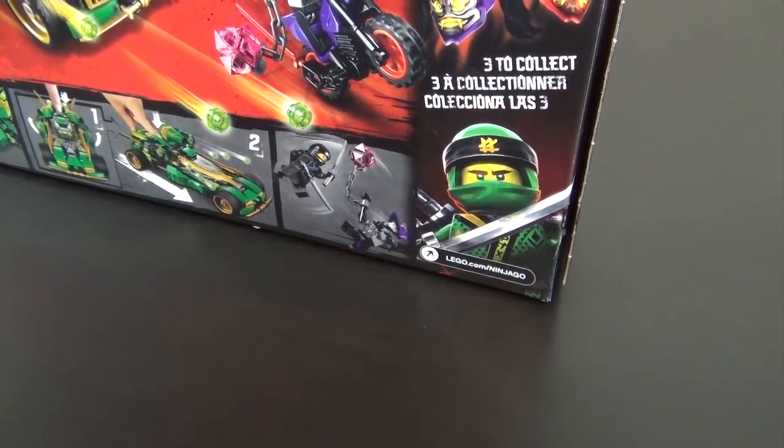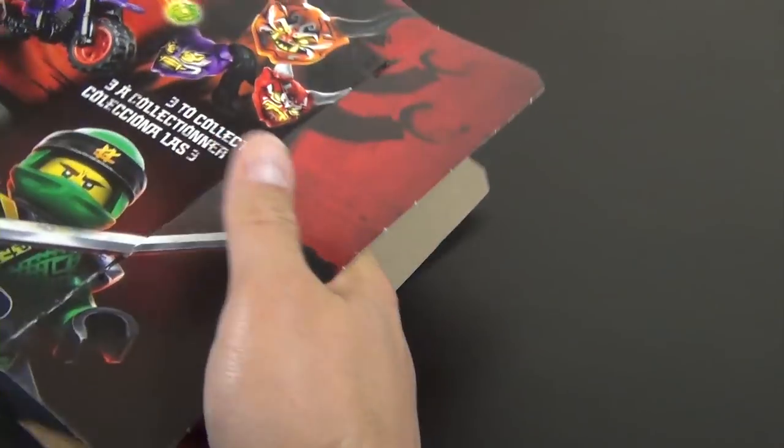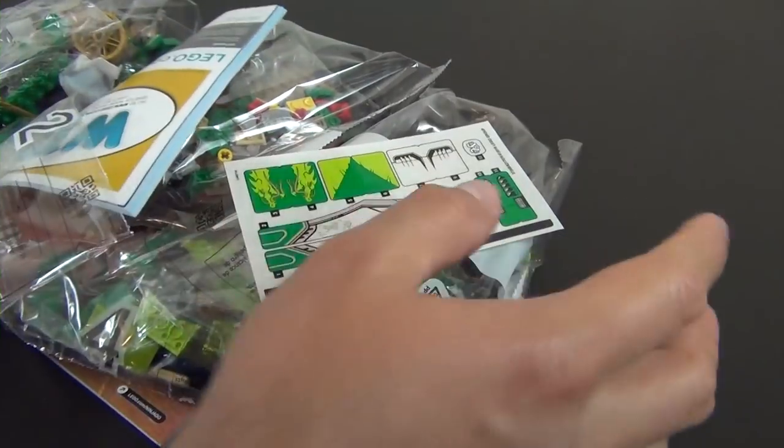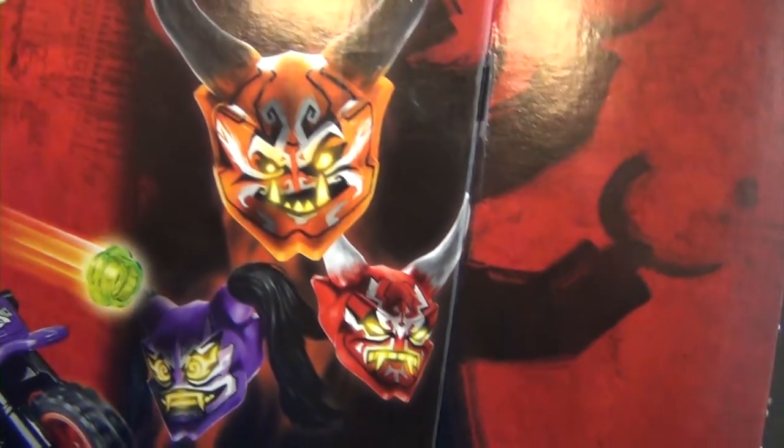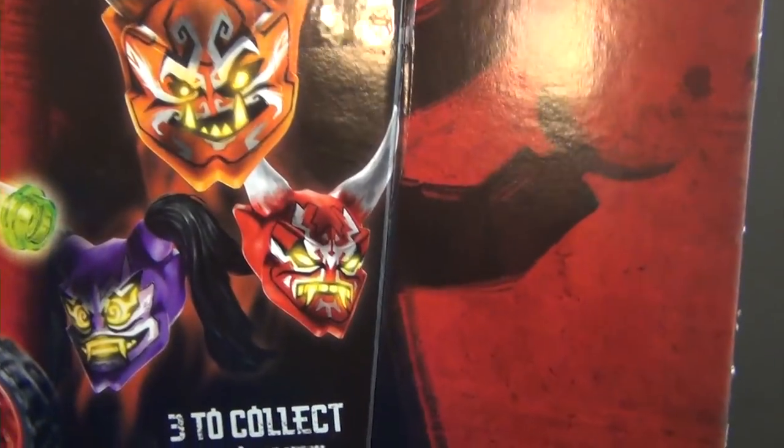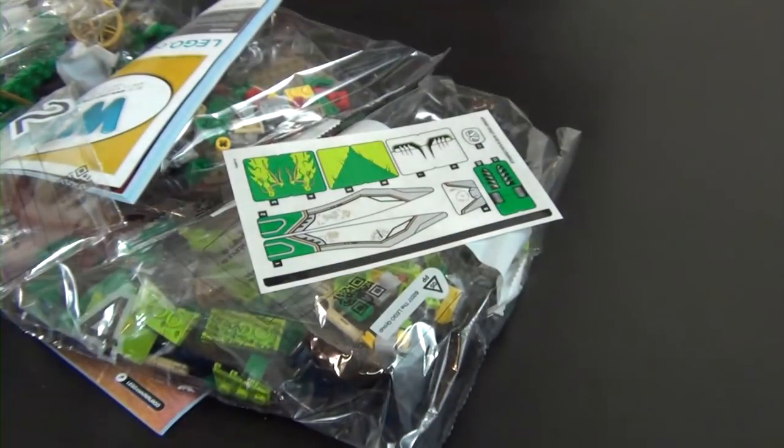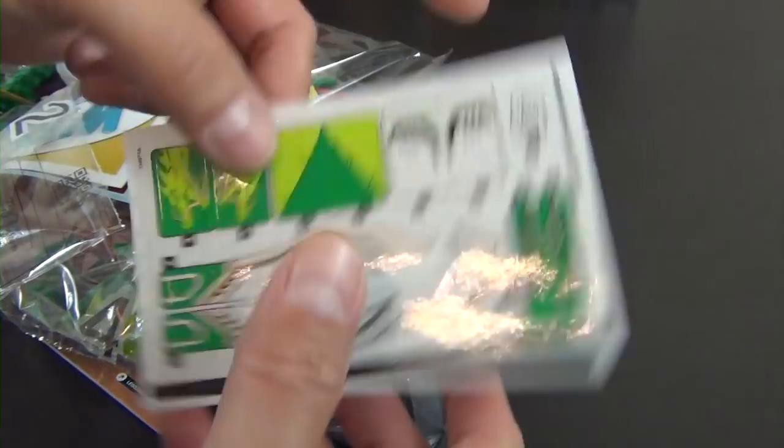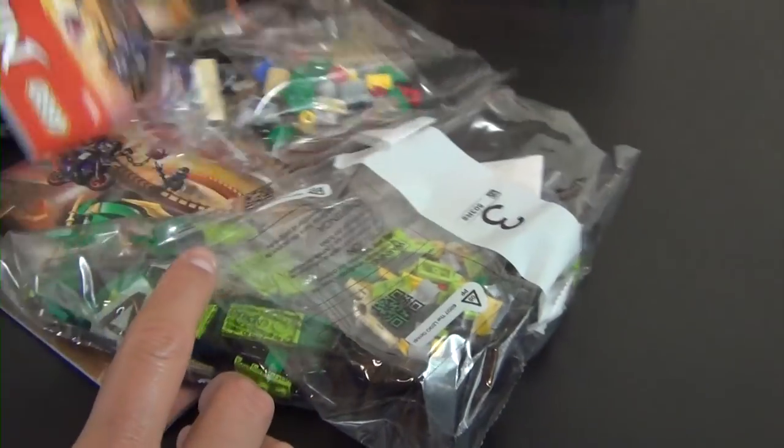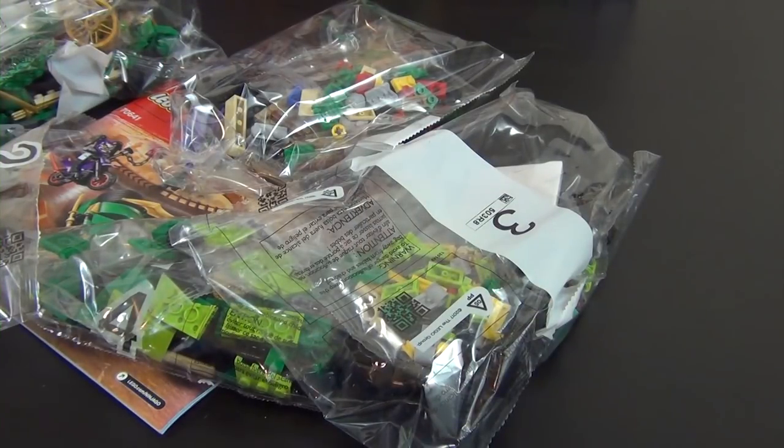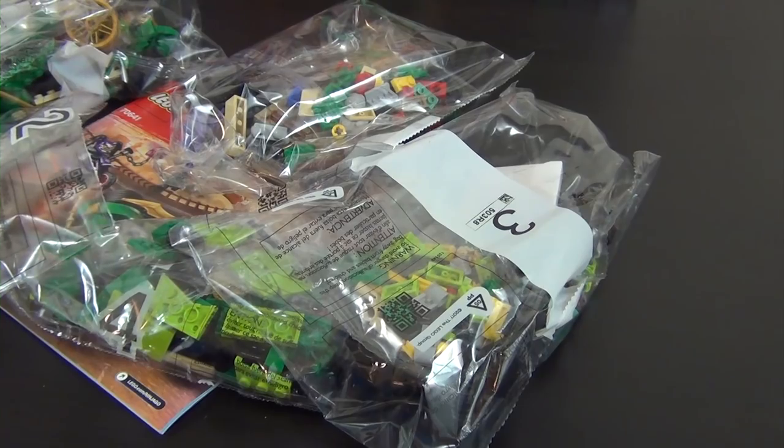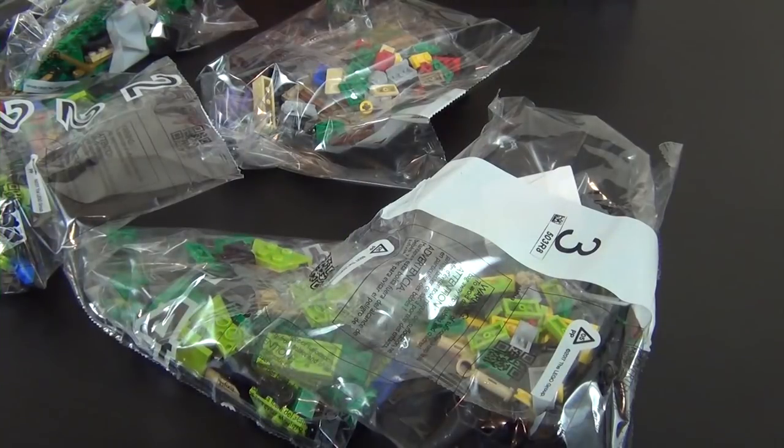Let's see what we have in here. On the back of the box it says three to collect, so I guess you collect three different masks for the villain figures. Alright, so we have a large sticker sheet that's actually in good condition. We have an instruction book number two that's slightly folded or rolled over, so I'll reverse roll it. And we have instruction book one that's in perfect condition.